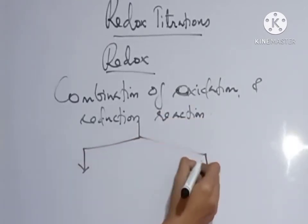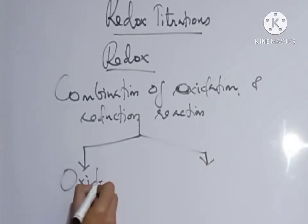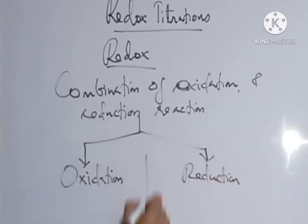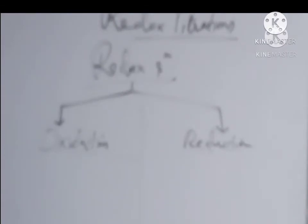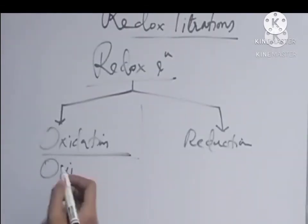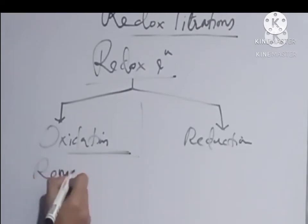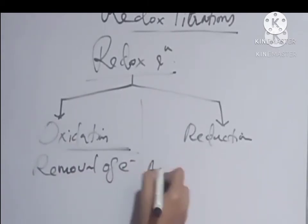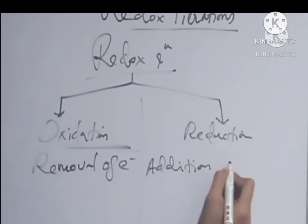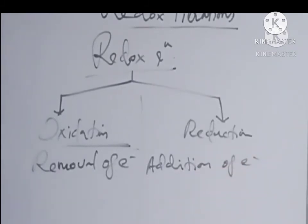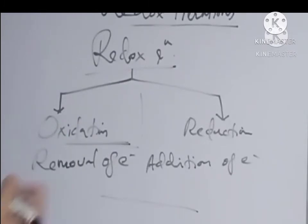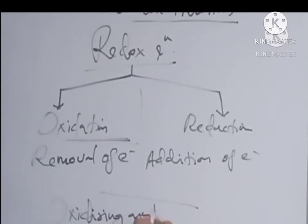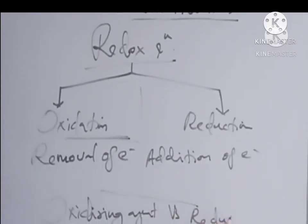What is oxidation and what is reduction? Oxidation and reduction can be defined in different ways. Oxidation means removal of electron, and reduction means addition of electron or gaining of electron. In a redox reaction, an oxidizing agent is titrated against a reducing agent.